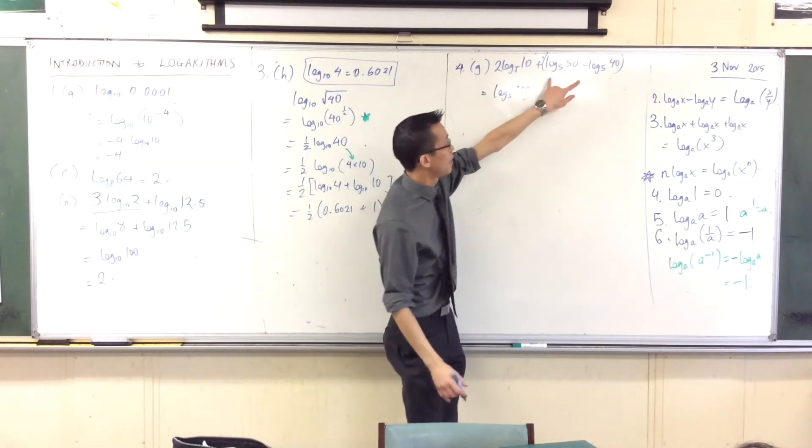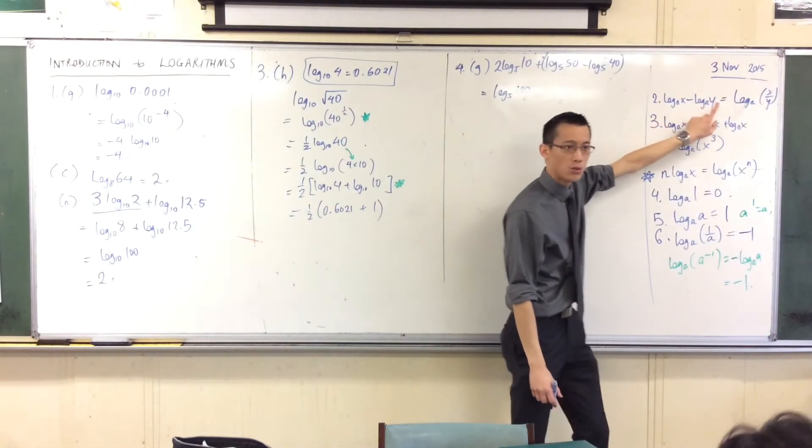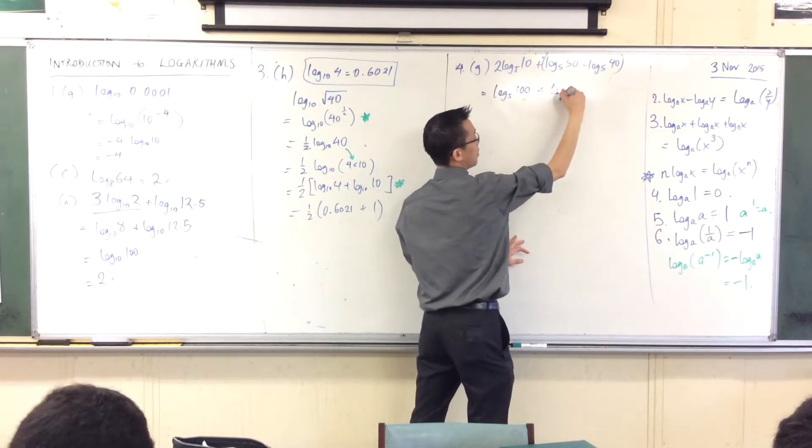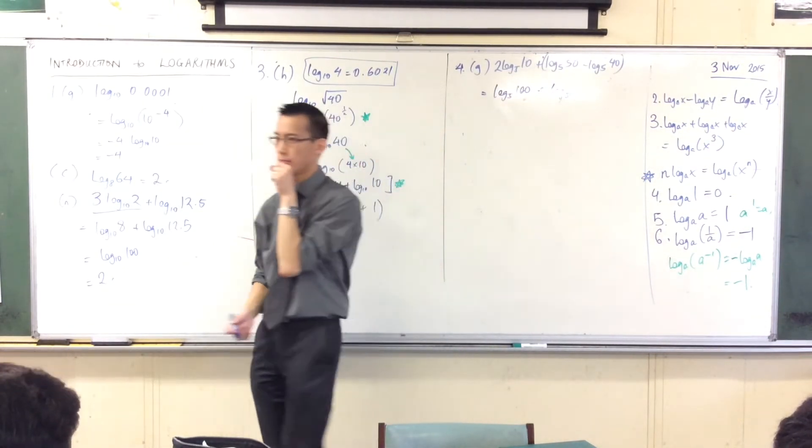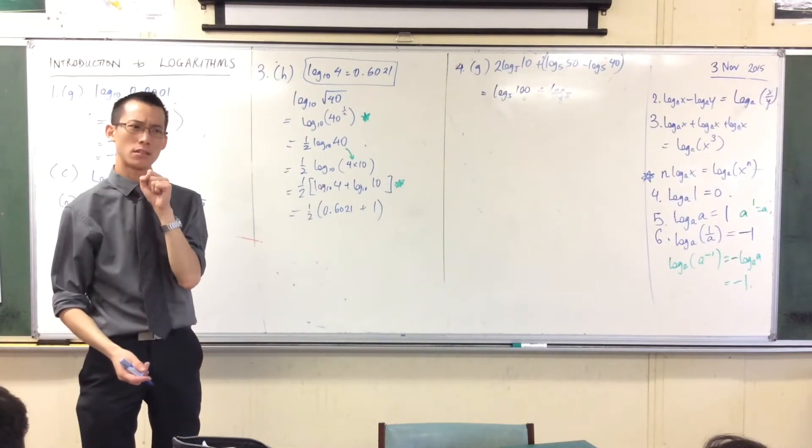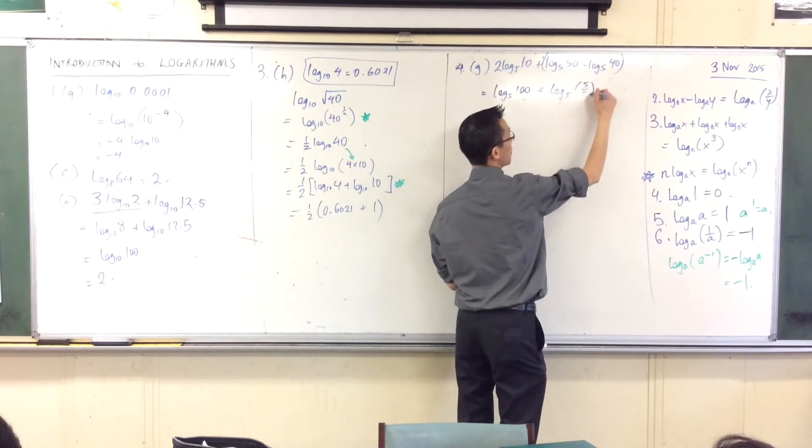Okay. Then over here, I've got subtraction. When you subtract logs, you divide what's happening in the middle, right? So this is going to be plus log base five of 50 divided by 40, which is five over four.